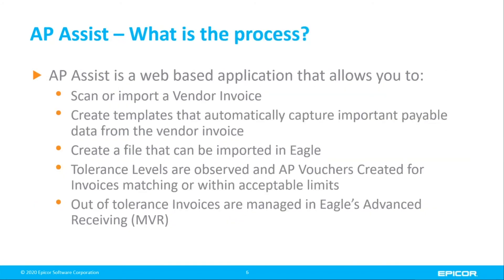To break down the process, you would go in and scan or import a vendor invoice, whether merchandise or non-merchandise related. The key part is creating templates that will capture the key pieces of information from that invoice, which will then be put into a file for Eagle stored on your Windows PC. We then bring up a viewer where we import that file and decide if the invoice is a perfect match or close enough — what we call a tolerance level — where it will allow that to be paid by a percentage or a dollar amount. Those can be set up by vendor.